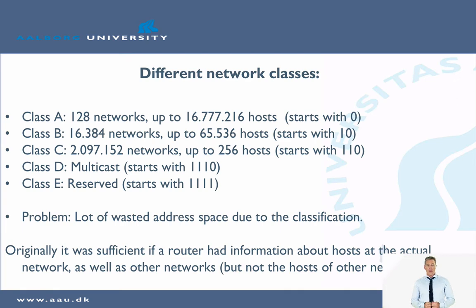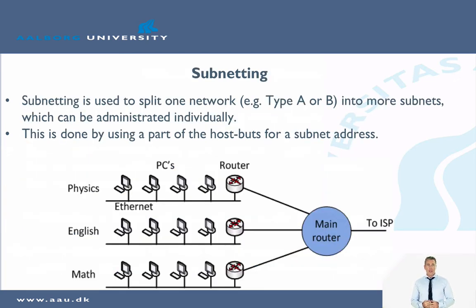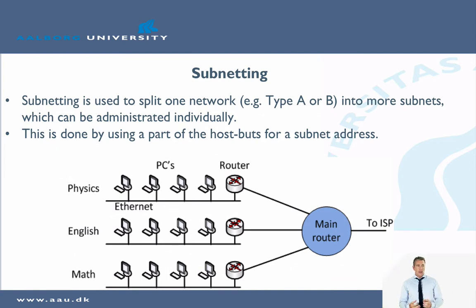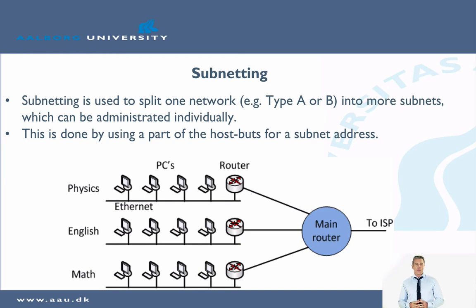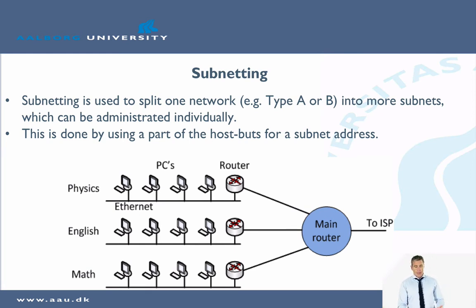To overcome some of these problems, networks started being split into subnets which could be administrated individually. So even if you had one large network — for example a university network — each router would need to keep track of all hosts in that entire network as well as all other networks elsewhere. There was a need to decentralize network administration. The solution was to create what are called subnets, so you can divide a network into a number of subnets which can each be administrated individually.